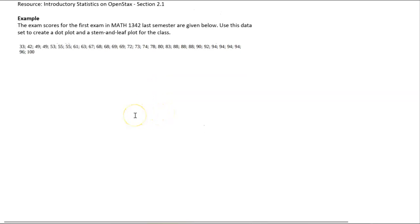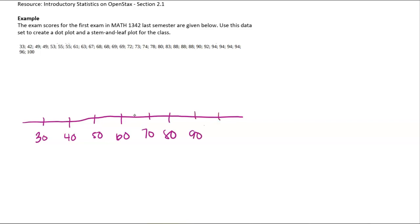A dot plot you will always want to start with a number line, and then always identify the smallest number, the minimum, and the largest number, the maximum. Looks like we need to go from 33 to 100, so I'm going to have a spot for 30, 40, 50, 60, 70, 80, 90, and 100.